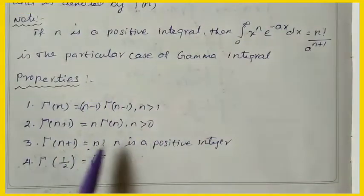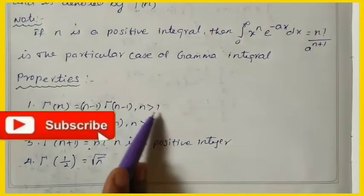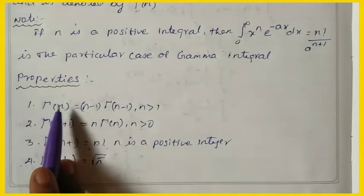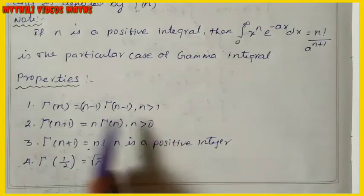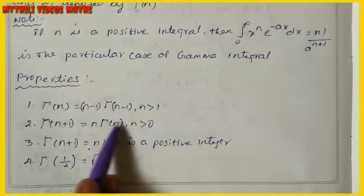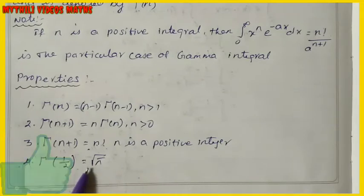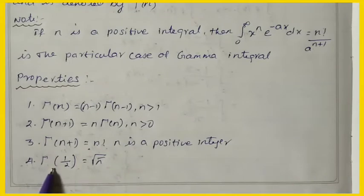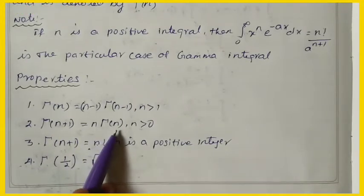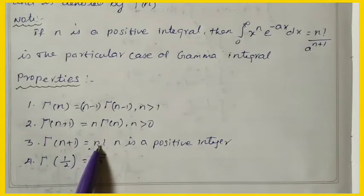They have given four very important properties. First: Γ(n) = (n−1)·Γ(n−1), for n greater than 1. Second: Γ(n+1) = n·Γ(n), for n greater than 0. Third: Γ(n+1) = n factorial. Fourth: Γ(1/2) = √π. We can use either the third or fourth property as needed — any one of them.